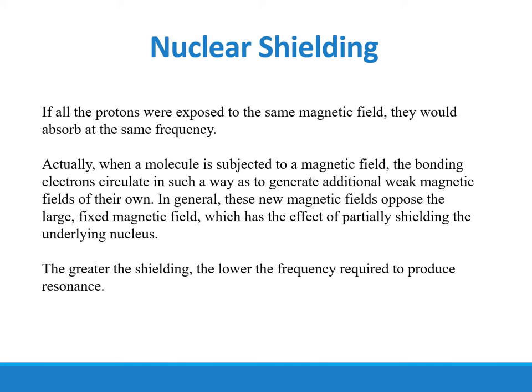Nuclear shielding: if all protons were exposed to the same magnetic field, they would absorb at the same frequency. Actually, when a molecule is subjected to a magnetic field, the bonding electrons circulate in such a way as to generate additional weak magnetic fields of their own. In general, these new magnetic fields oppose the large fixed magnetic field, which has the effect of partially shielding the underlying nucleus. The greater the shielding, the lower the frequency required to produce resonance.